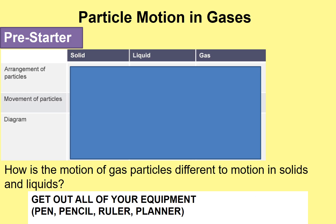So a pre-starter: if you are at home, please do this on a piece of paper, or you can do it in your head if you can remember the bits. If you are in school, then please do this on a mini whiteboard. I want you to tell me the arrangement of particles — describe those particles in a solid, liquid, and gas. Remember those are the three states of matter. Describe what those particle movements are like, and then draw a quick diagram. I'll give you four minutes — off you go.